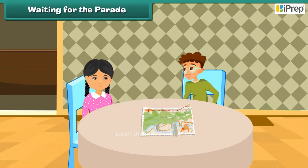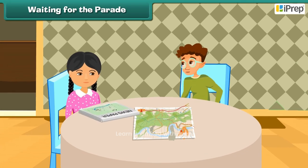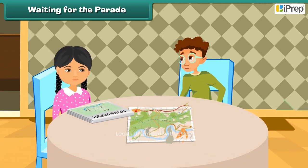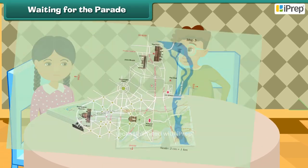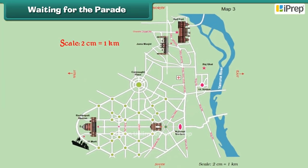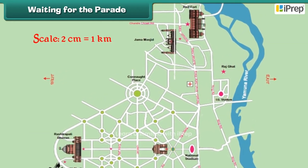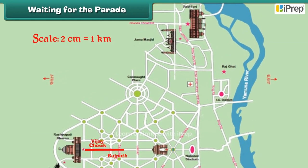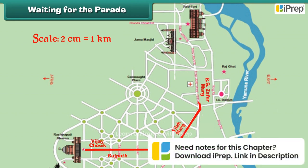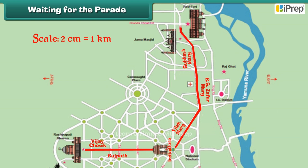Amit shows a newspaper to Aashi in which the route of the 15th August Parade is given: Vijay Chok, Rajpath, India Gate, Tilak Marg, B.S. Zafar Marg, Subhash Marg, Red Fort.